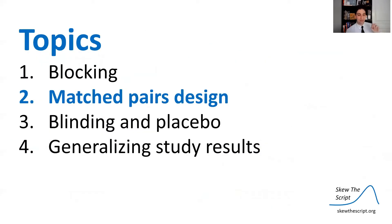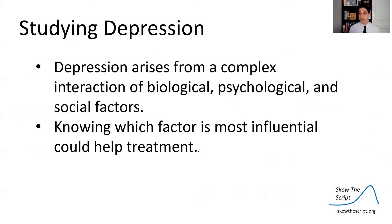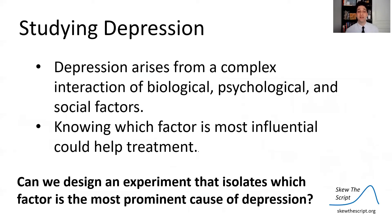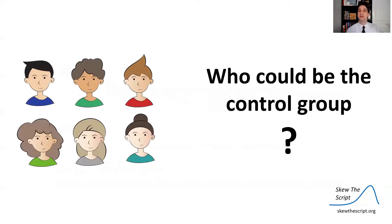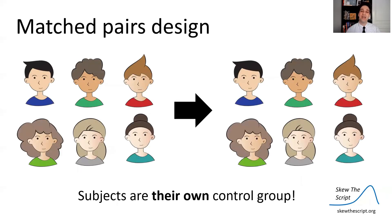Now let's talk about a specific type of block experiment called matched pairs, and we'll look at this in the context of studying depression. Depression is a mental disorder that arises from a complex interaction of biological, psychological, and social factors, and knowing which factor is most influential could help treatment. Can we design an experiment that isolates which factor is the most prominent cause? This is really difficult because individuals have very different symptoms, levels of depression, biochemical, psychological, and environmental conditions. So what if we made the individuals their own control group?